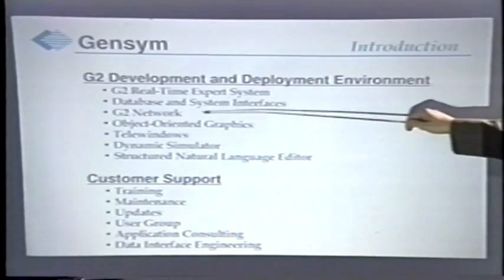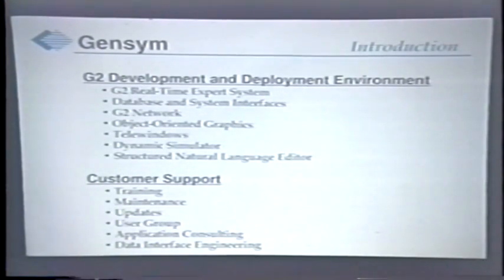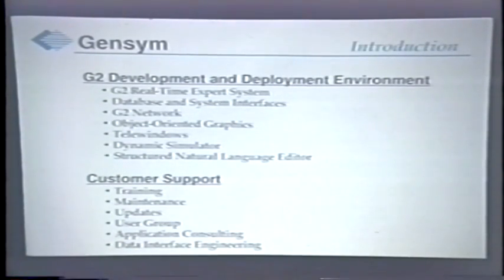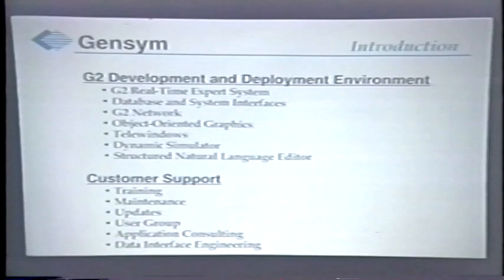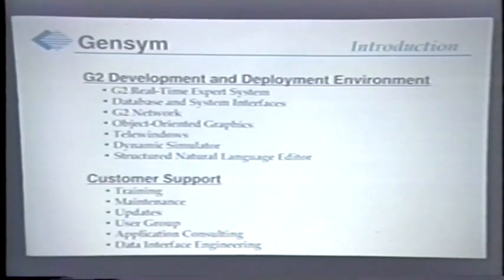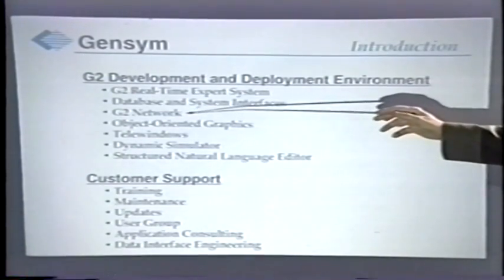G2 also brings together a technology we call G2 Network, which allows multiple applications to communicate with each other so that G2 can be distributed in cooperative online reasoning for many parts of an organization, and these can be in communication and cooperation with each other.